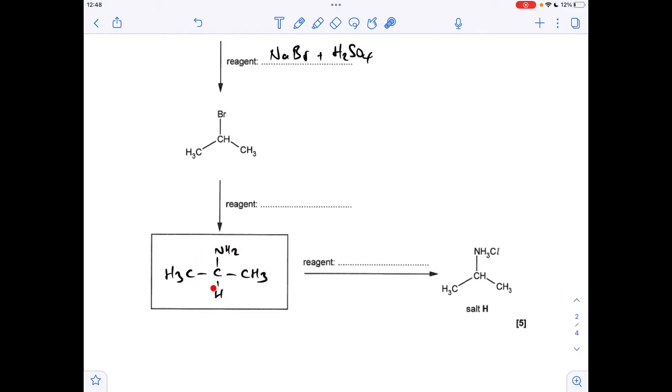So now all we need to think about is how do you go from a haloalkane to an amine? We react it with ammonia in ethanol. And now the final change. What's happened? We've gone from NH2 to NH3Cl. So it's obviously reacted with HCl.